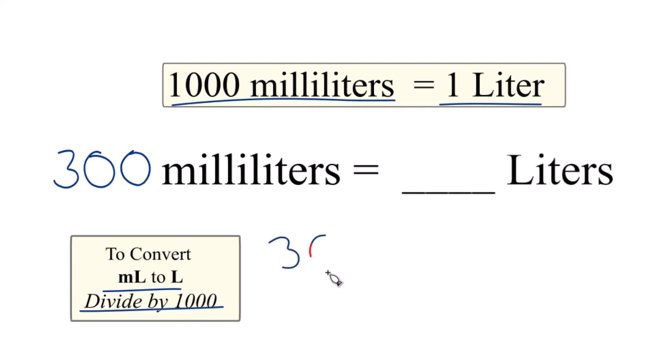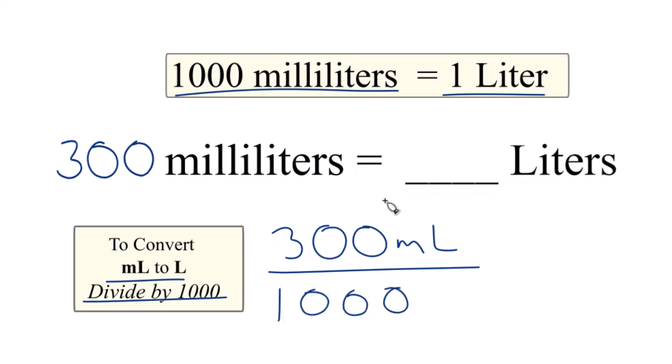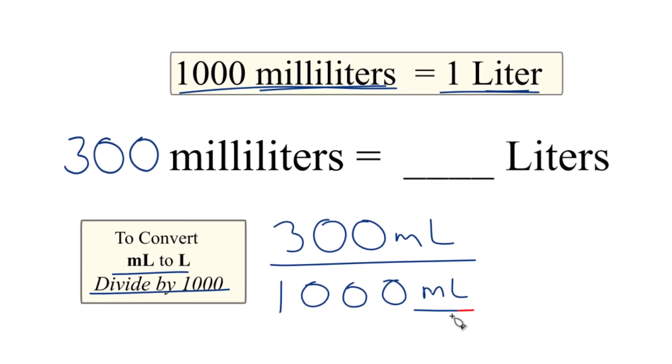So we take 300 milliliters and we divide that by 1,000. And that's 1,000 milliliters in one liter, so we could call it milliliters per liter here.